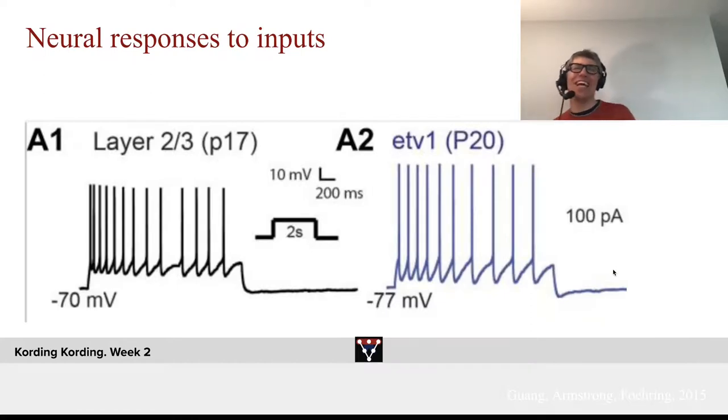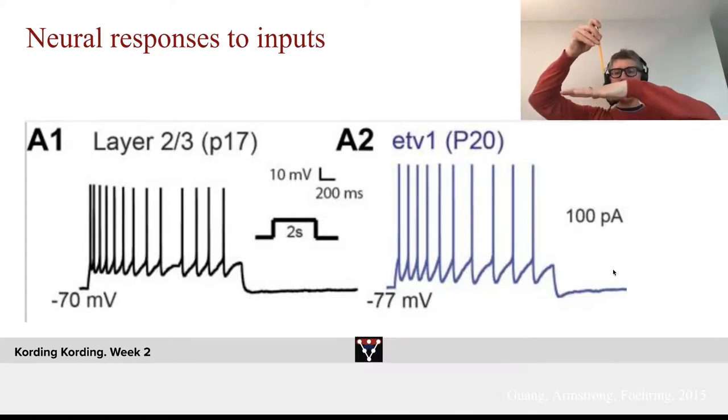Let's look at neural responses to inputs. What we do here is we take a cell that we have in a dish, and we take an electrode, and we stick it into the electrode. And what we do is, for two seconds, we put voltage into that. And then what we get is we get responses out of this cell. It's what's called a spike train. We can see how, at first, it spikes very quickly, and then it spikes a little less quickly. That is what's called adaptation.